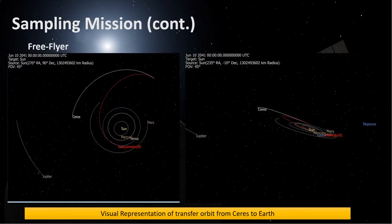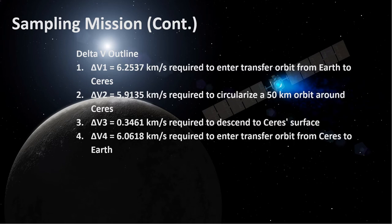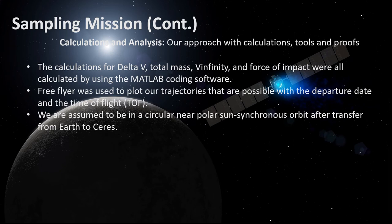Here is a visual representation generated by FreeFlyer that shows our return orbit back to Earth from Ceres. Through MATLAB, we were able to calculate all our delta-Vs required for the mission. Our delta-V1 of 6.2537 km/s was required to enter a transfer orbit from Earth to Ceres. Our delta-V2 of 5.9135 km/s is required to circularize a 50-kilometer orbit around Ceres. Our delta-V3 of 0.3461 km/s is required to descend to Ceres' surface. Our delta-V4 of 6.0618 km/s is required to enter the transfer orbit from Ceres to Earth. The majority of our calculations for delta-V, total mass, V-infinity, and the force of impact were done through MATLAB, and FreeFlyer was used to plot the trajectories possible with the departure date and time of flight.